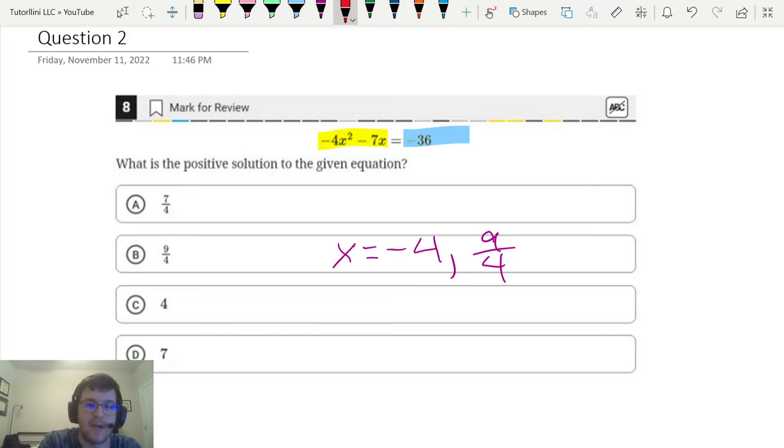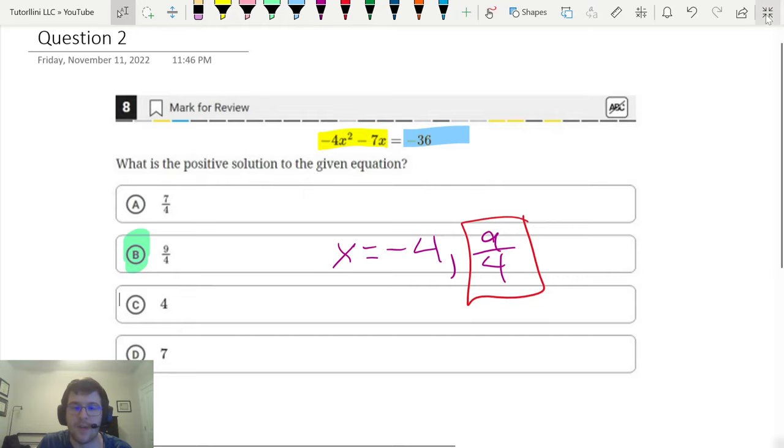Great. And again, it wants the positive solution. So the answer is 9 over 4, which is answer choice B. Awesome. Last question. Very same thing.